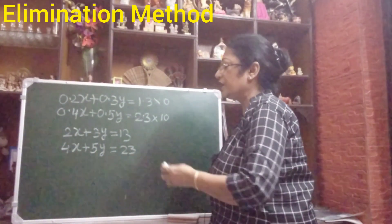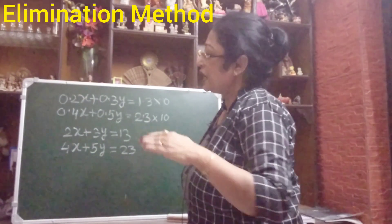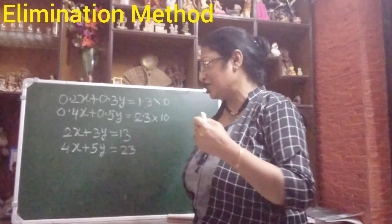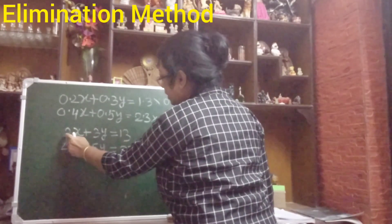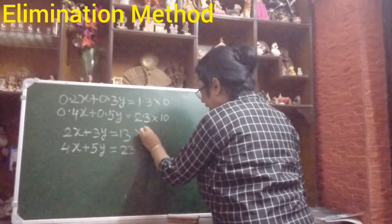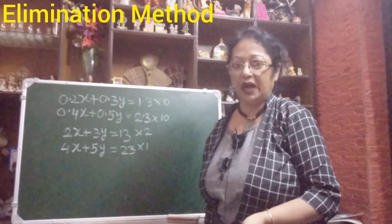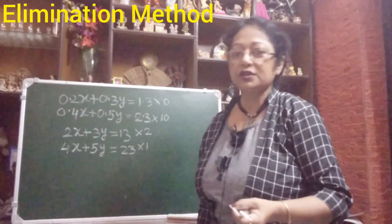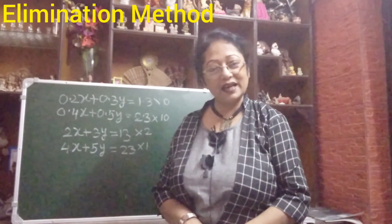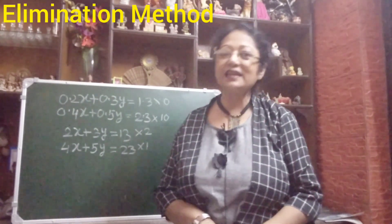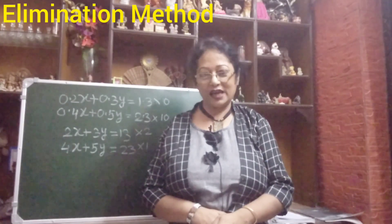Now our equations are without any decimal point, so easily we can solve them. I am giving you a little hint: this will be your homework, and in the comment box tell me the values of x and y. You can see the coefficients of x are different — here it is 2 and here it is 4. So multiply equation number 1 by 2 and keep equation number 2 the same. Then use the elimination method, solve it, and write me the values of both x and y.